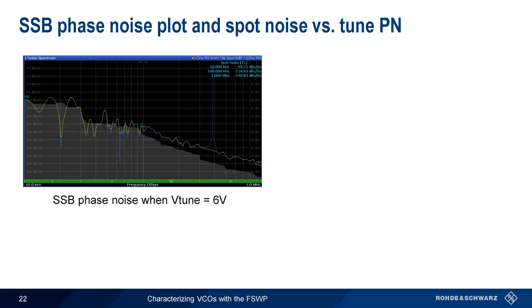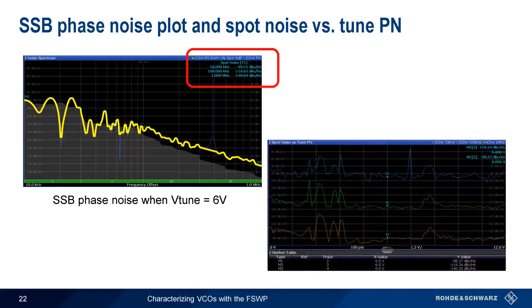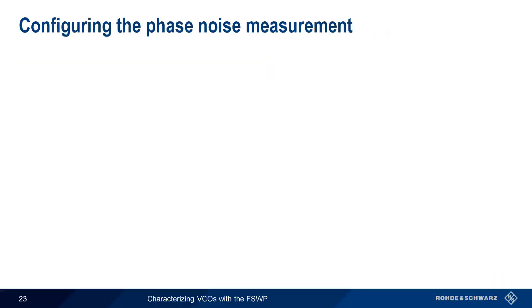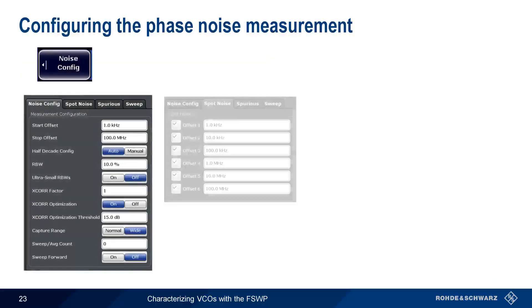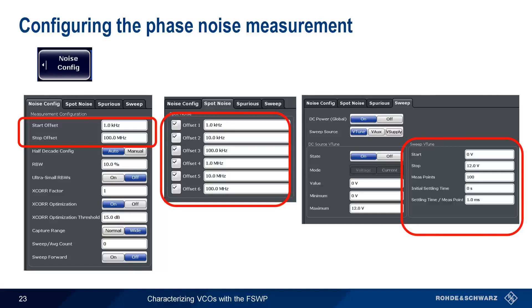Let's look at this another way. If we fix V-tune at 6 volts and make a standard phase noise measurement, the results include both the single sideband phase noise graph and the spot noise at our user-defined offsets. Next, let's make a spot noise versus tune phase noise measurement using these same three offsets. Placing markers at 6 volts on all three traces, we should see approximately the same values for spot noise at each of our user-defined offsets. There are a number of parameters to configure when making any type of phase noise measurement on the FSWP, found under Noise Config. The most important are defining the start and stop offsets of the measurement and the offsets at which we wish to make spot noise measurements — be sure these spot noise offsets fall within the start and stop offset range. Please see the separate presentation on Measuring Phase Noise with the FSWP for more information.